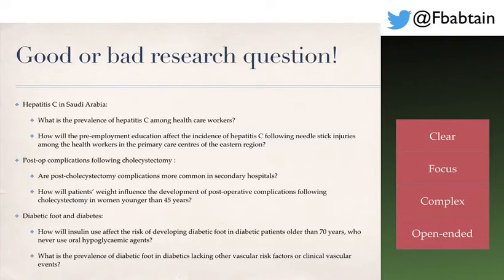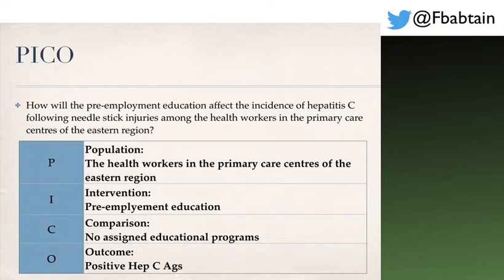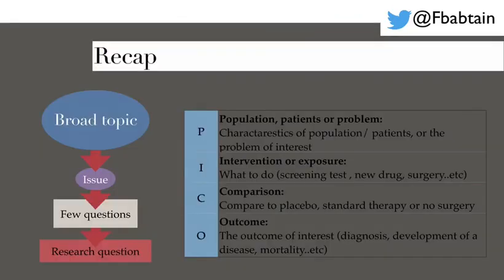I hope these examples give you a better idea of how to come up with a good research question. Returning to the Hepatitis C question — agreeing the second question is better — let's apply PICO. The population is healthcare workers in primary care centers of the Eastern Province. The intervention is pre-employment education. The comparison group is the same population who never received pre-employment education. The outcome is presence of Hepatitis C, measured by positive Hepatitis C antigens.